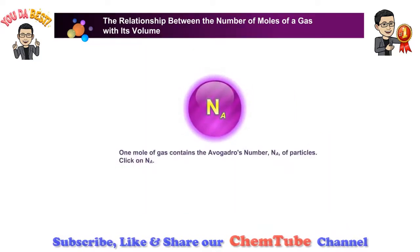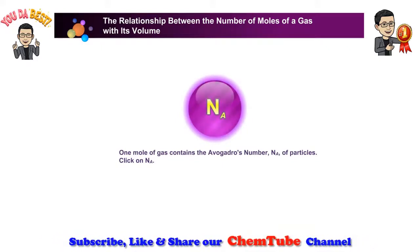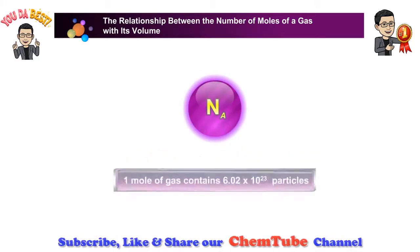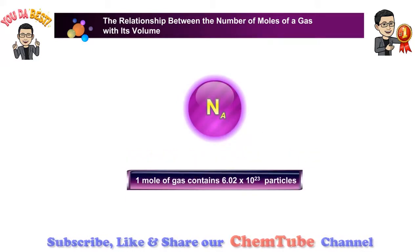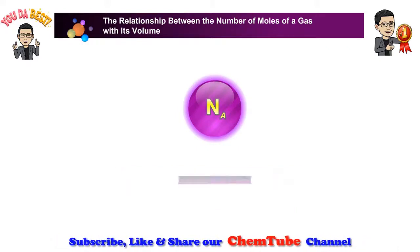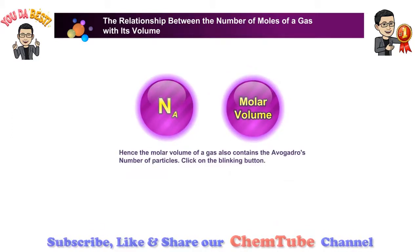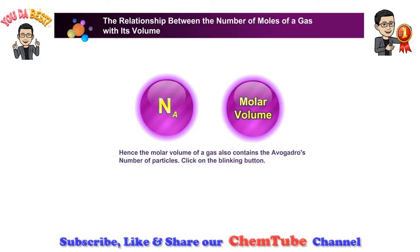One mole of gas contains the Avogadro number of particles — specifically, 6.02 times 10 to the power of 23 particles. Hence, the molar volume of a gas also contains Avogadro's number of particles.